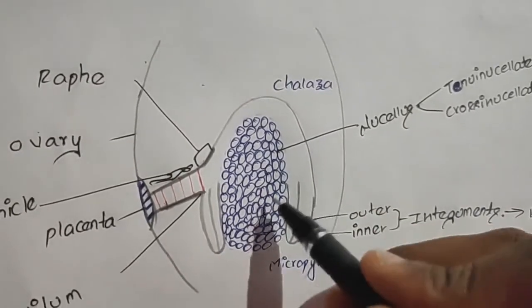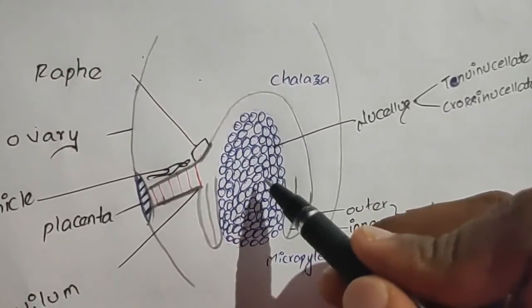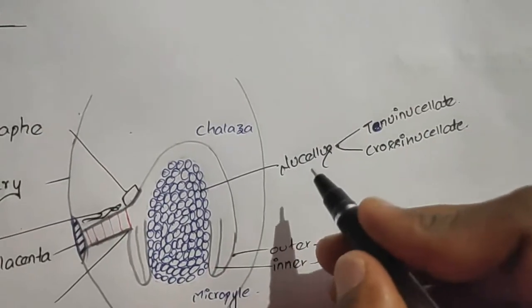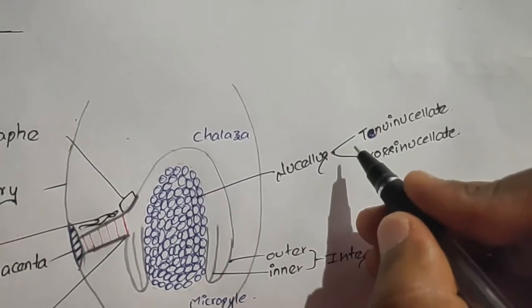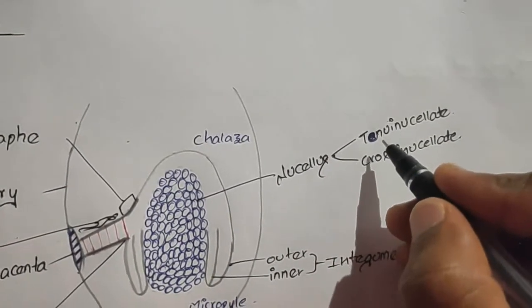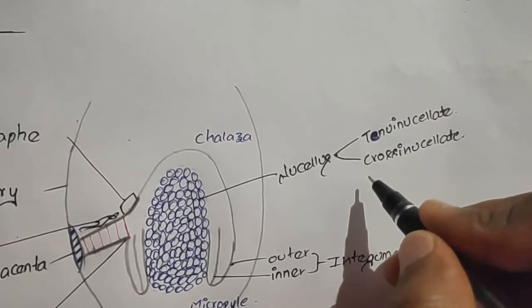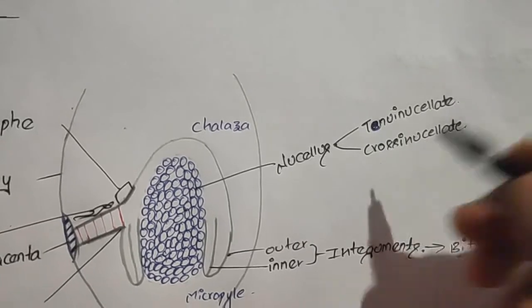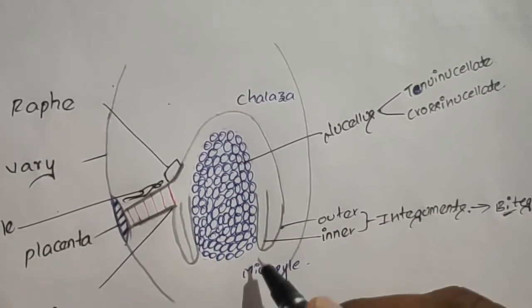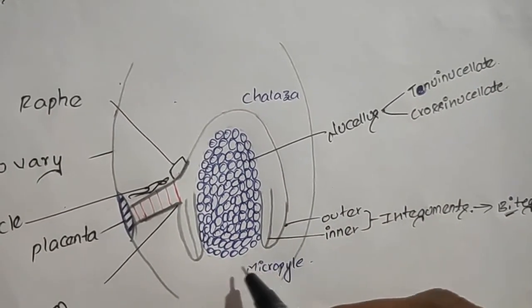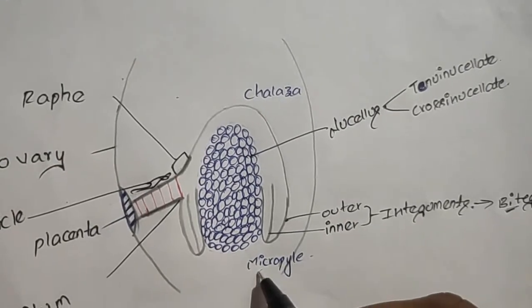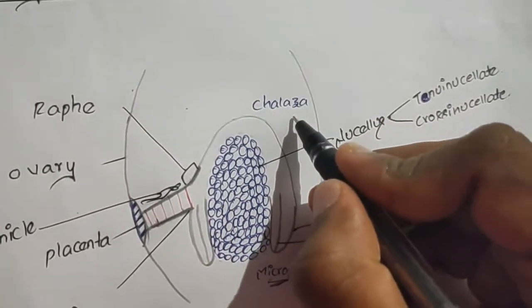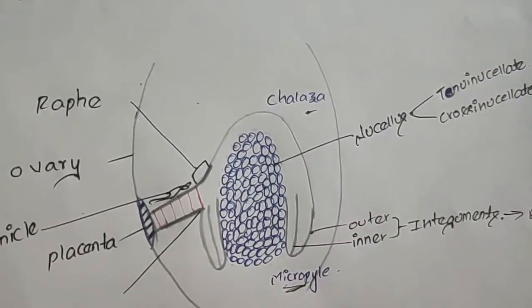Inside the body part, many cells are present known as the nucellus. If the ovule has fewer nucellus cells, such type of ovule is known as tenuinucellate. If the ovule has many nucellus cells, such type is known as crassinucellate. The place where the integuments are open is known as the micropyle end, and the place where the integuments are closed is known as the chalaza end.